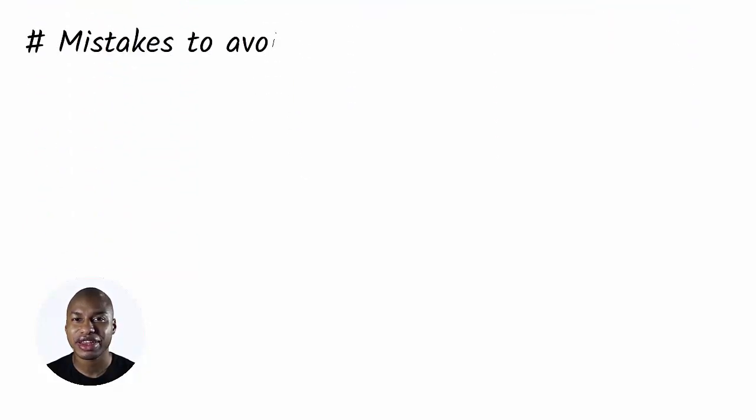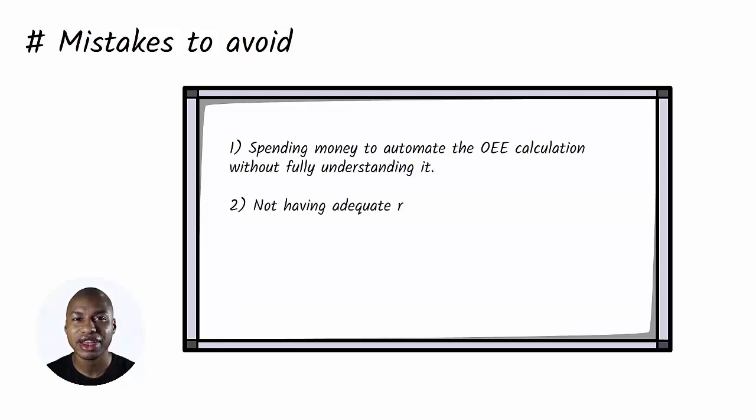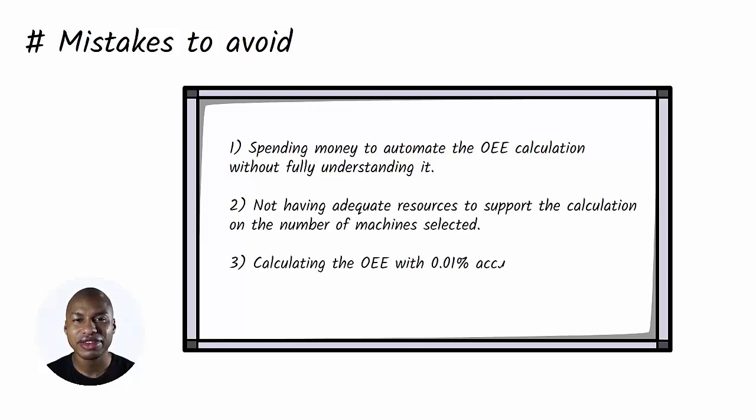Mistakes to Avoid. 1. Spending money to automate the OEE calculation without fully understanding it. 2. Not having adequate resources to support the calculation on the number of machines selected. 3. Calculating the OEE with 0.01% accuracy when not needed.